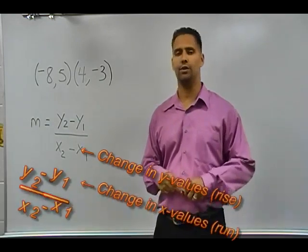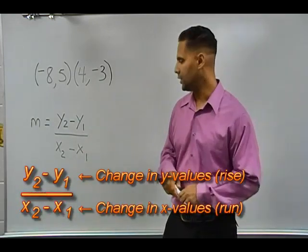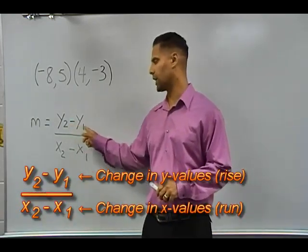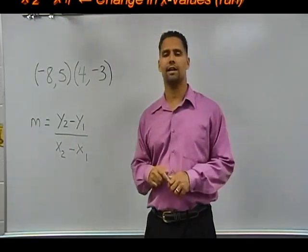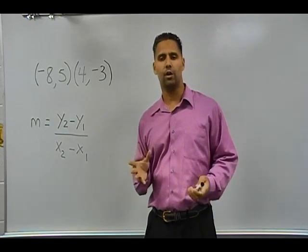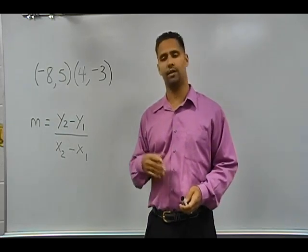To figure this out, all we have to use is our slope equation, which is y2 minus y1 being divided by x2 minus x1. But some people have a hard time figuring out what's the x1 and what's the x2 and what's the y1 and the y2.